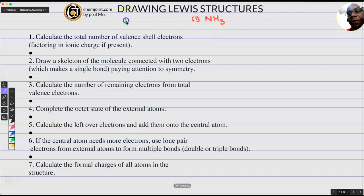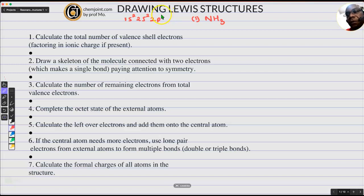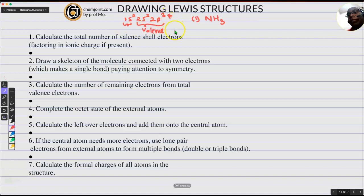Alternatively, you can draw the electronic configuration of nitrogen. Nitrogen has atomic number 7, so it will be 1s², 2s², 2p³. You see the outermost shell is the second shell. Those are the valence electrons. These are the core electrons, and these are the valence electrons, the outermost. They take part in bonding. 2 plus 3 is 5.